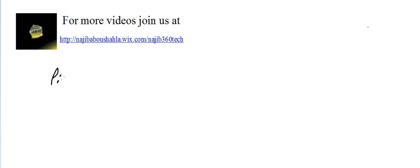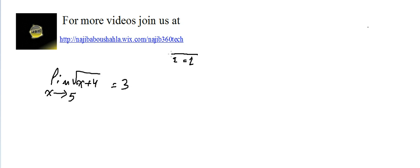Video limits number 10: given that the limit of radical(X + 4) as X approaches 5 equals 3, find the value of Delta that is guaranteed by the definition of the limit to exist, corresponding to epsilon equal to 1. Here he wants me to use epsilon equal to 1. We have to find Delta using the limit definition.